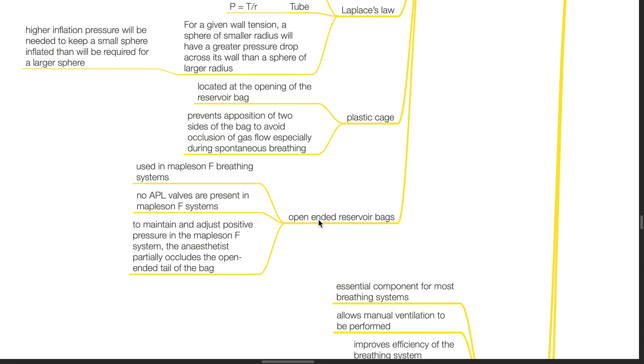Regarding open-ended reservoir bags, these are used in Mapleson F breathing systems. No APL valves are present in Mapleson F systems. To maintain and adjust positive pressure in the Mapleson F system, the anesthetist partially occludes the open-ended tail of the bag.